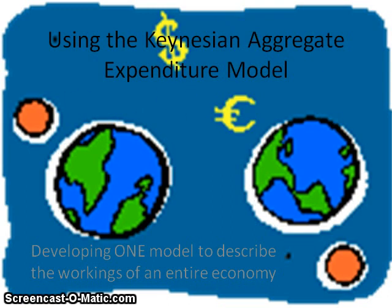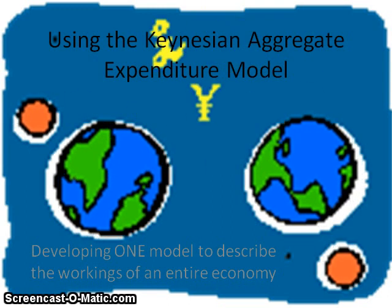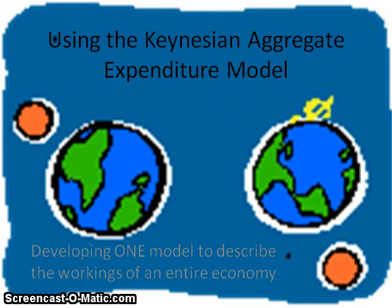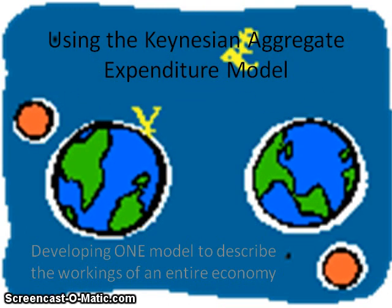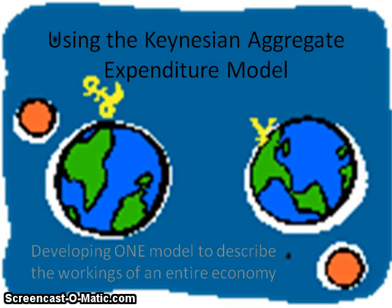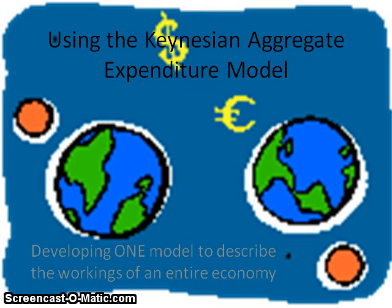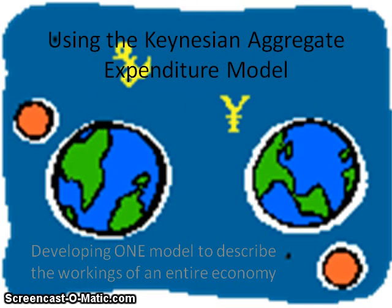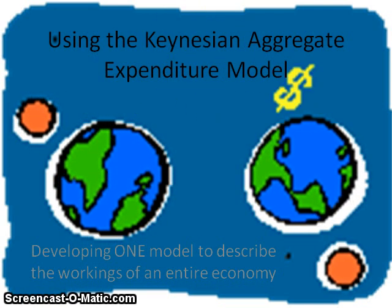Hello, everyone. Today we're going to unravel the aggregate expenditure model, which was developed by a British economist named John Maynard Keynes some 70 or 80 years ago.